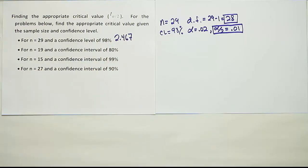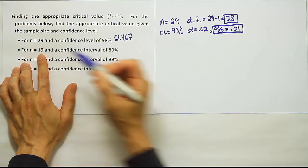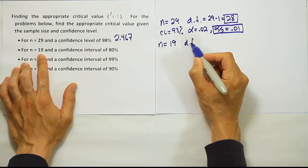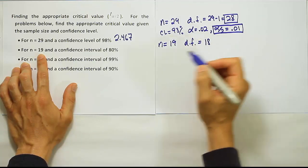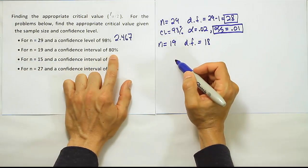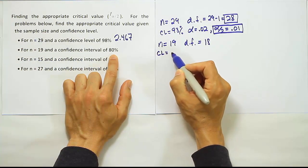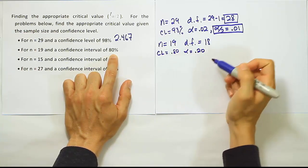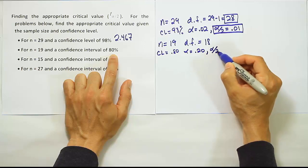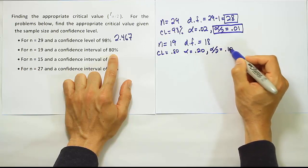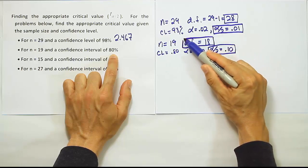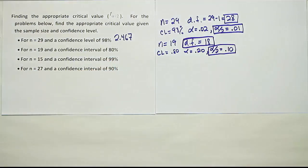For the next problem, we need the degrees of freedom and alpha divided by two. N equals 19, so the degrees of freedom is 18 — just n minus one. The confidence level is 80%, so alpha is 0.20, because 80 and 20 add up to 100. Alpha divided by two is half of 0.20, which is 0.10. We'll find both 0.10 and 18 degrees of freedom on our T table to get the corresponding T value.